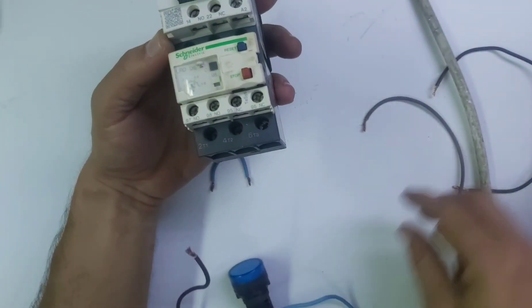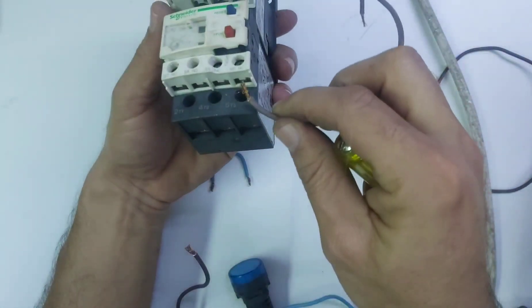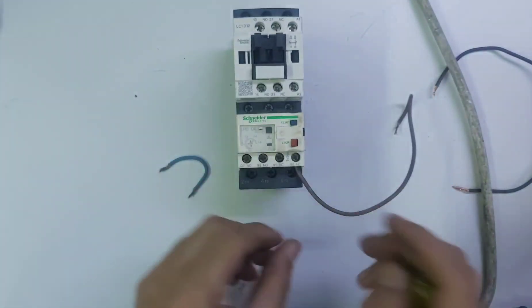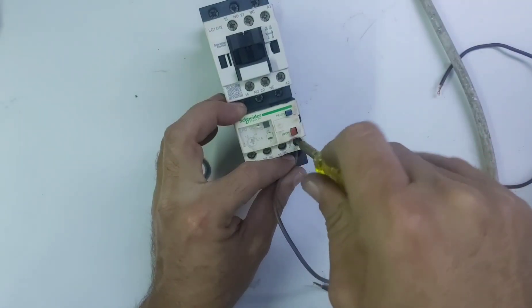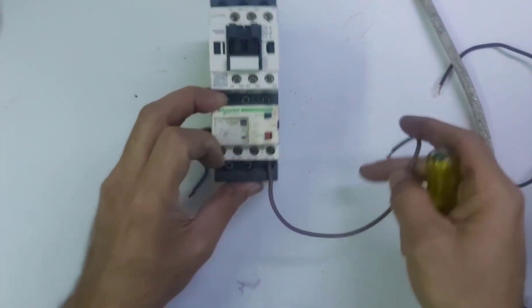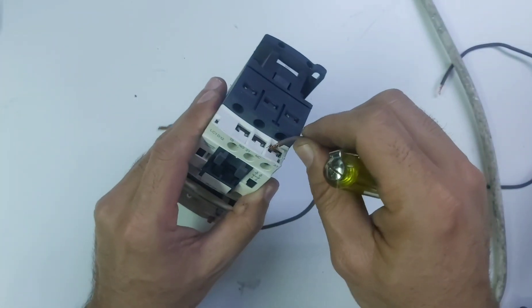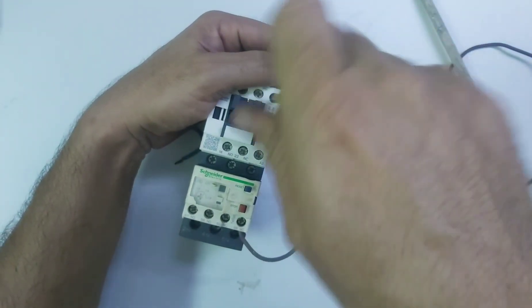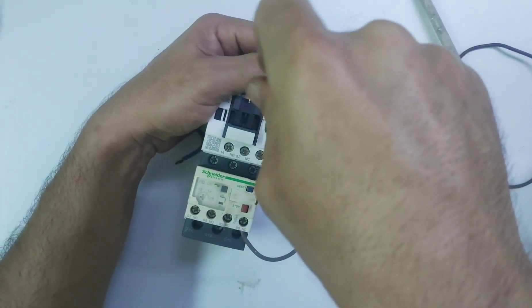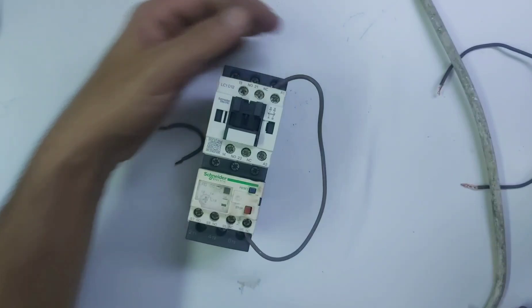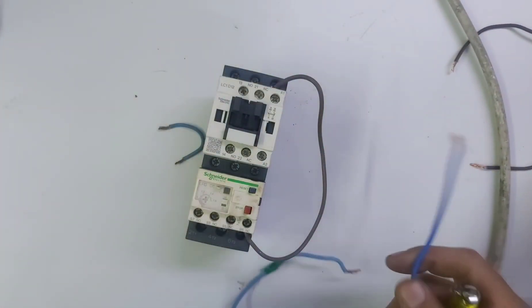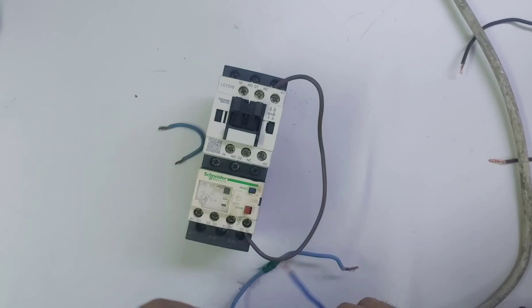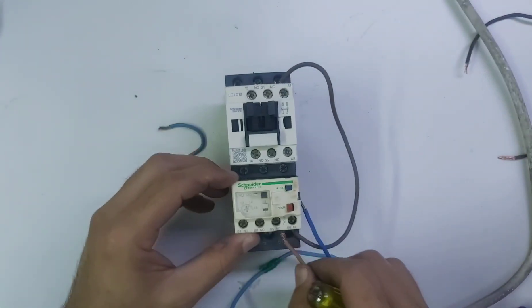Okay, first you need to loop, one loop 95 to A1. Now you need to connect line to 95.